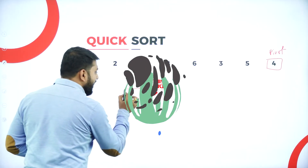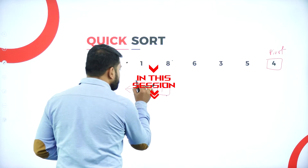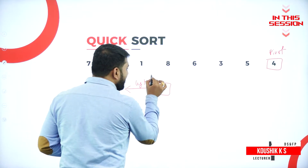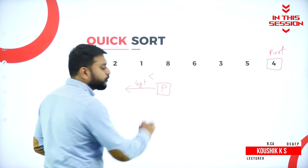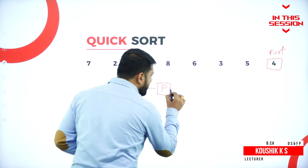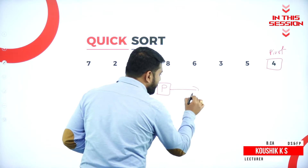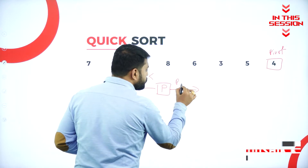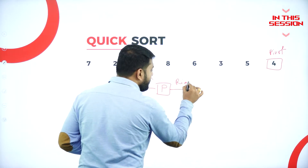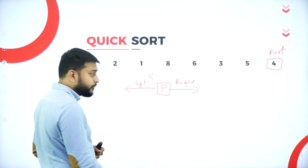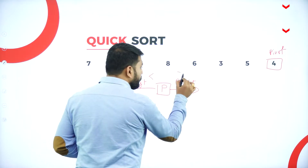Whatever the element that I have towards the left should be less than this pivot element, and whenever I consider this element, whatever I have towards the right, it should be greater than the pivot element.